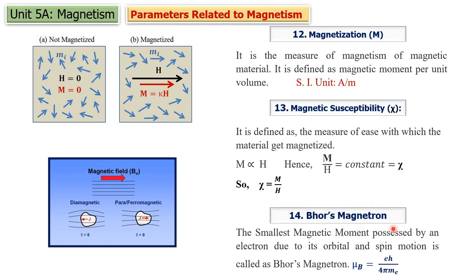Bohr's magneton — we studied this in the last lecture but we will revise it again. The origin of magnetism, as studied in the first video lecture, is the orbital motion and spin motion of electrons. Since an electron is a charged particle, its orbital and spin motions give rise to a magnetic moment for the electron, or magnetic moment for an atom.